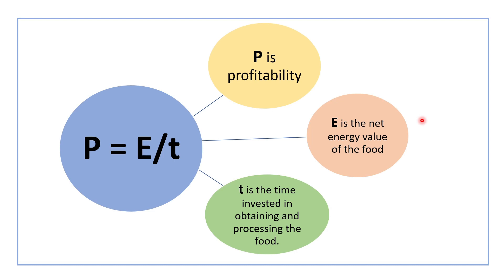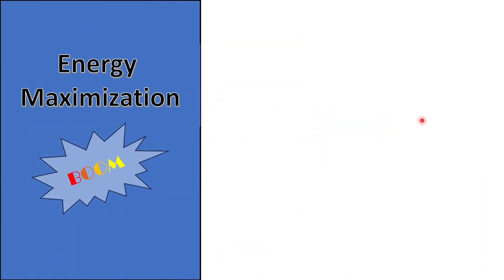From this, we can identify some key points regarding optimal foraging theory. The first point is energy maximization. As seen in the formula P = E / T, E is the net energy — that is, energy gained minus energy invested. To have a higher P, E must be higher. So higher E means higher P — that is energy maximization.